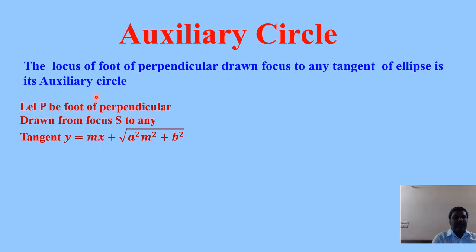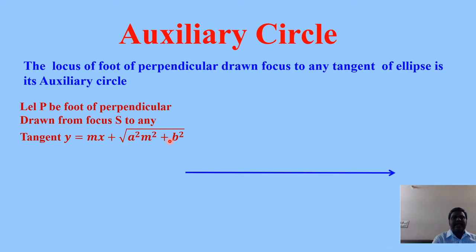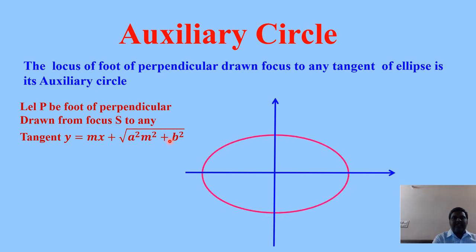Let P be the foot of perpendicular drawn from the focus S to any tangent in slope form. The equation of any tangent of the ellipse is y = mx + √(a²m² + b²). Let P be any one such foot of perpendicular drawn from focus S to the tangent.